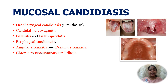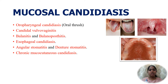Mucosal candidiasis is exhibited as oropharyngeal candidiasis or oral thrush, presenting as white, adherent, painless patches in the mouth. Candida vulvovaginitis is characterized by pruritus, pain, and vaginal discharge, which is usually thin but may become whitish and curd-like in severe cases. Other mucosal forms include esophageal candidiasis, angular stomatitis, denture stomatitis, and chronic mucocutaneous candidiasis, which may be seen in infants and children with deficient cell-mediated immunity due to a T-cell defect.